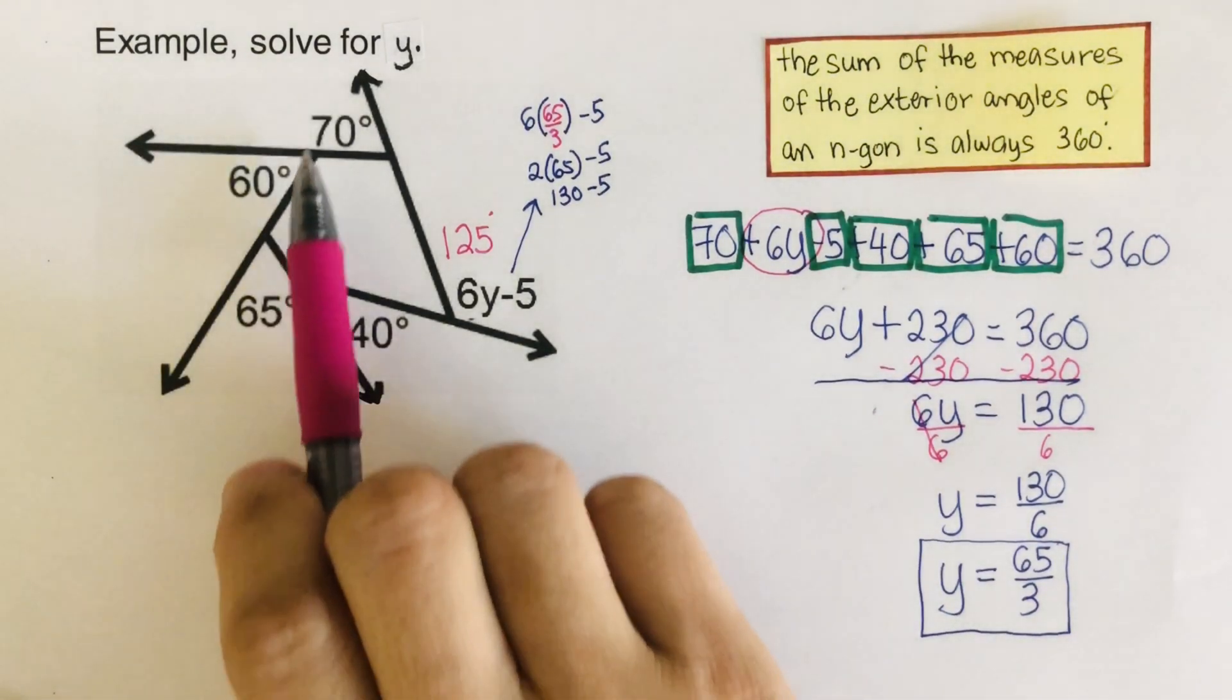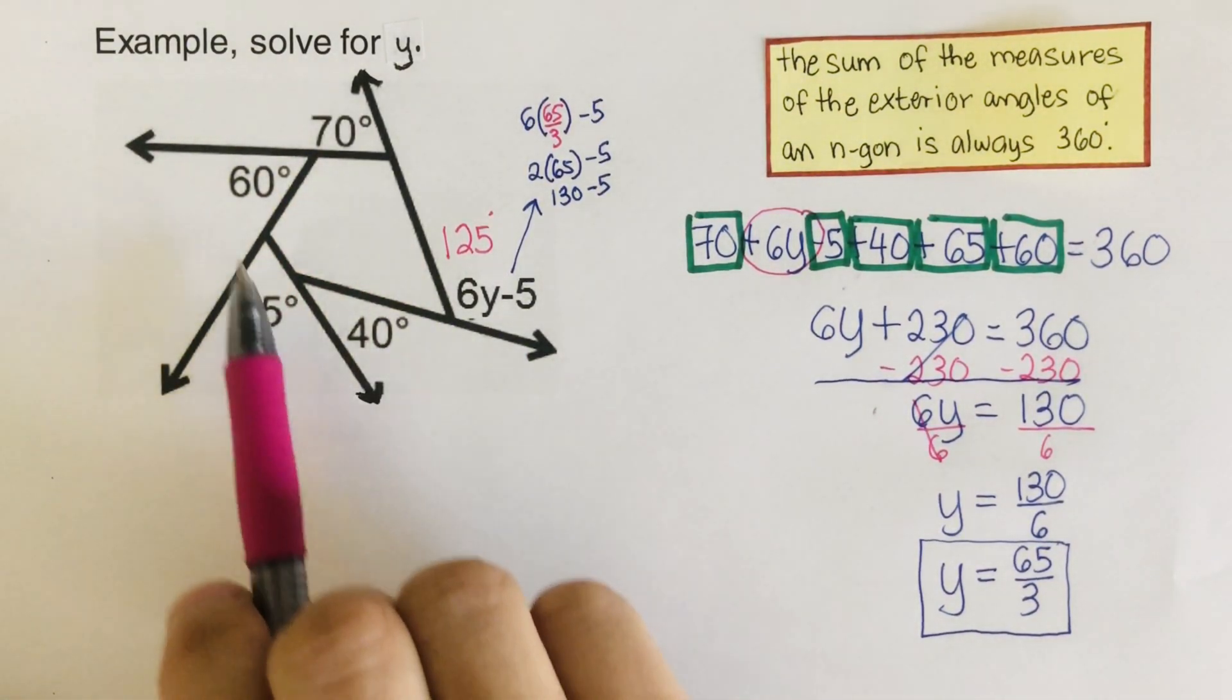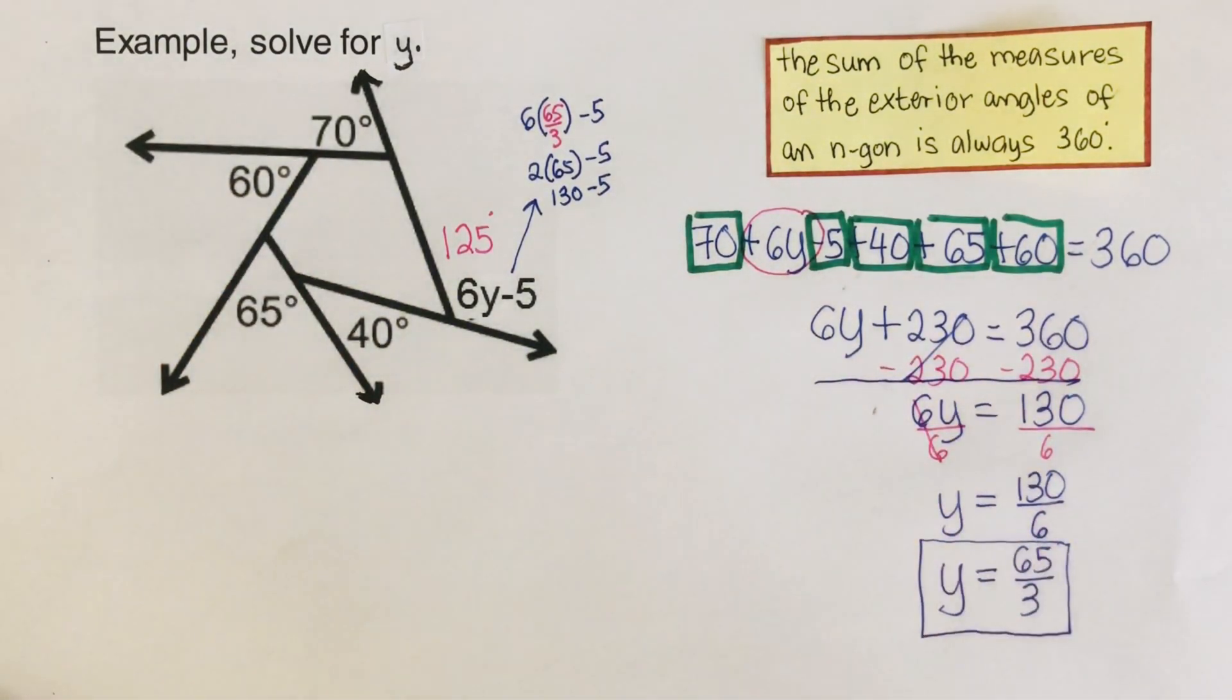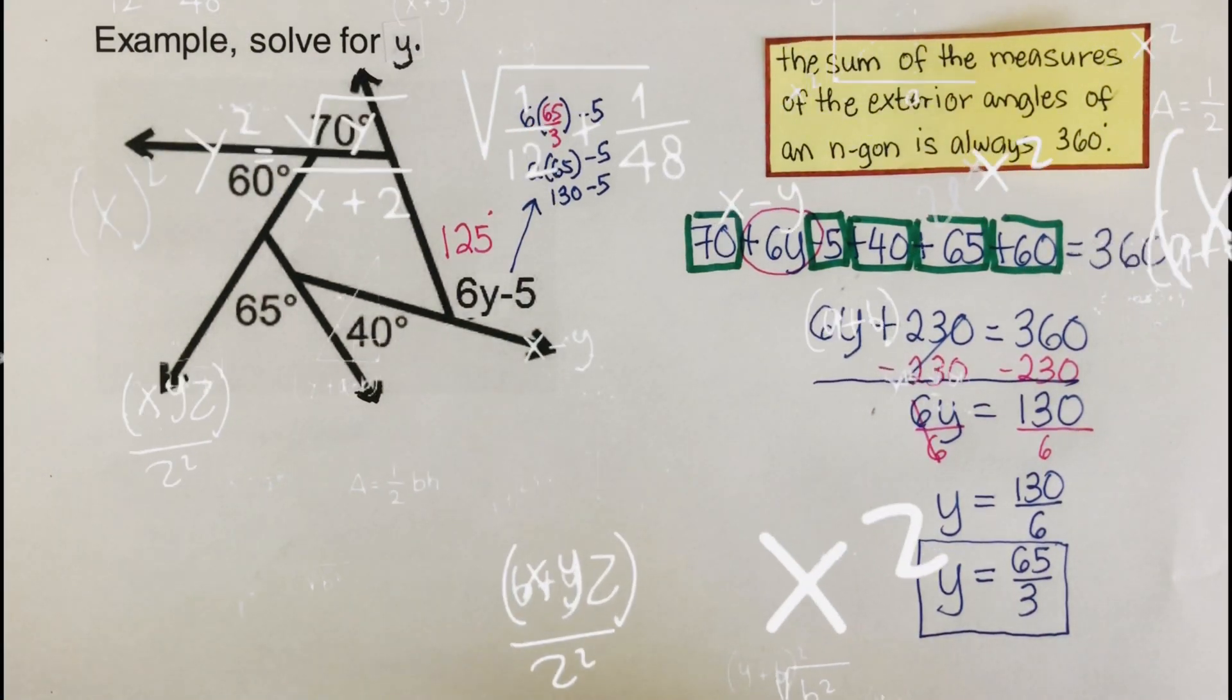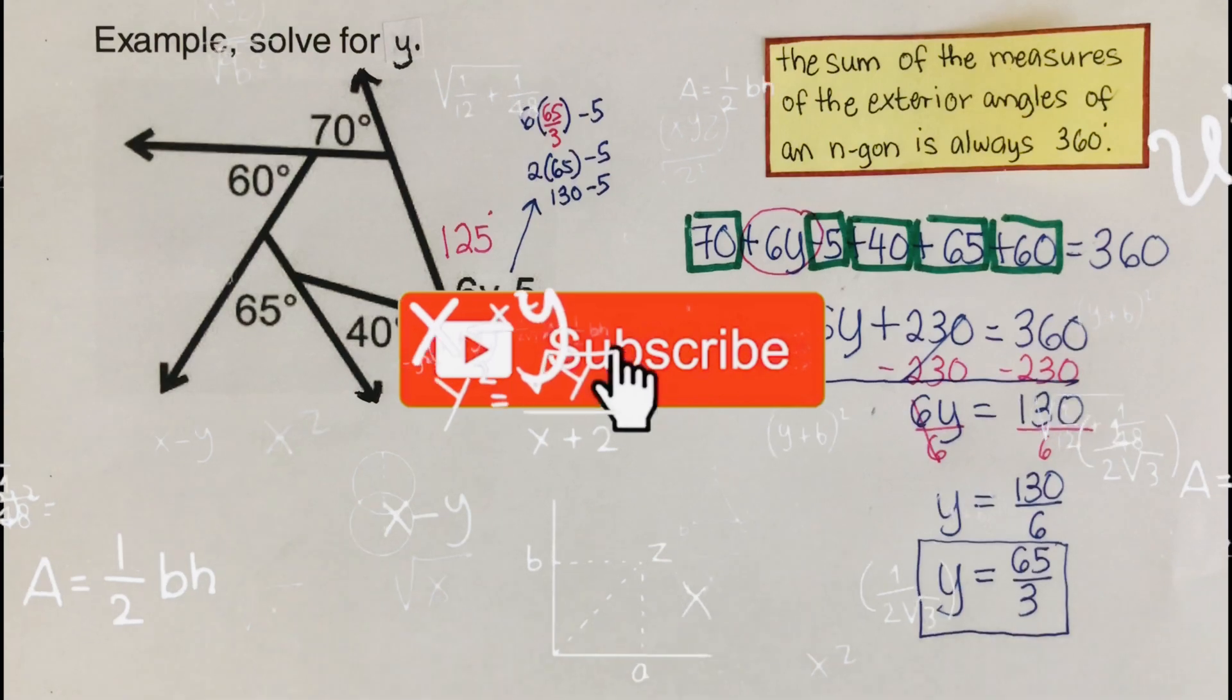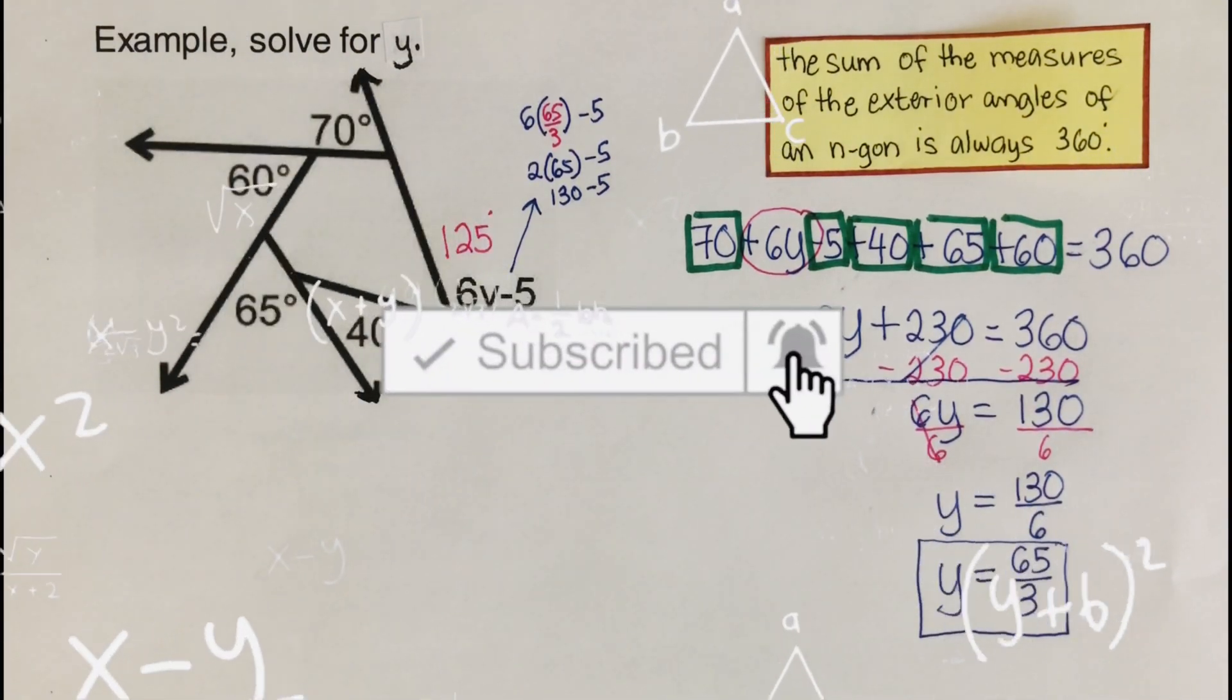So if you add 70, 125, 40, 65, and 60, the total is 360. Did you get the same answers as these? Good, perfect. If you find this video helpful, hit like and subscribe for more math videos. See ya!